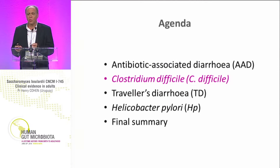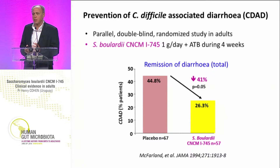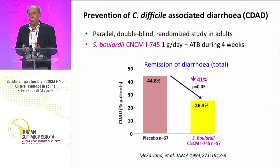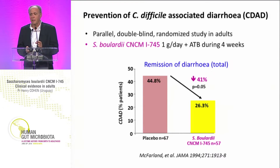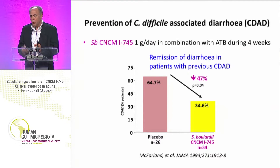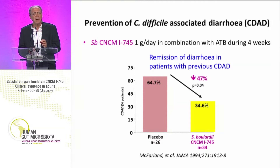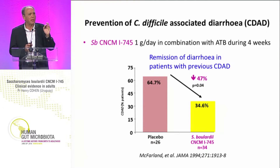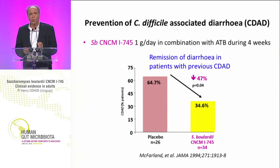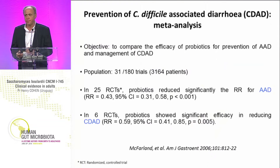The second topic is the situation of Clostridium difficile. This is a work by McFarland in 1994 — a parallel double-blinded randomized study in adults with Saccharomyces boulardii at one gram per day plus antibiotic for four weeks. We see that remission of diarrhea decreases by 41% compared to placebo. Using the same dosage in combination with antibiotic for four weeks, but analyzing remission in patients who already have Clostridium difficile-associated diarrhea, Saccharomyces boulardii compared to placebo produces a risk reduction of 47%.